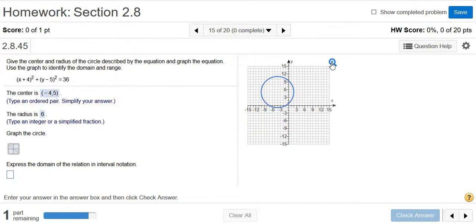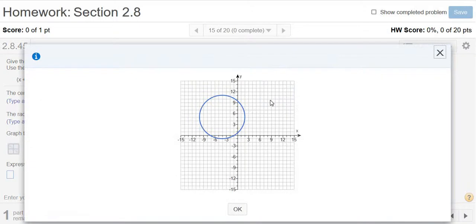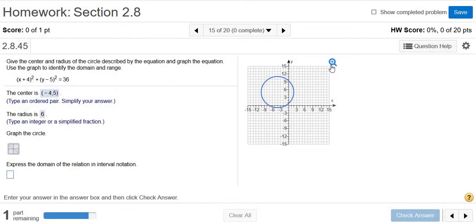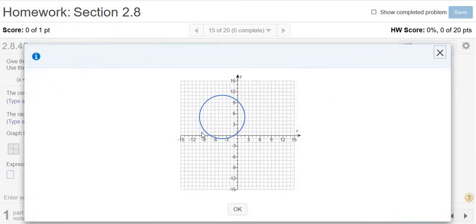Now we want the domain. So the domain is all the X's. So I'm going to click on this magnifying glass. That doesn't really help. Well, I guess it helps a little bit. So it looks like it's going to be negative 10. So left to right, negative 10 all the way to 2. So let's try that. So negative 10, right? Negative 10 all the way to 2.